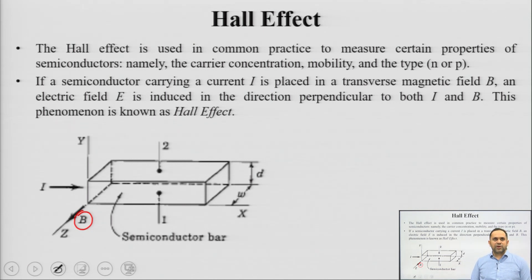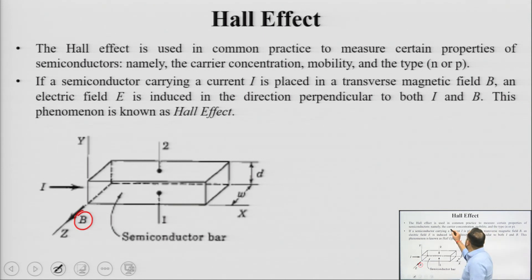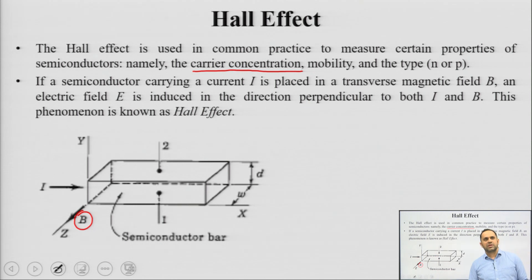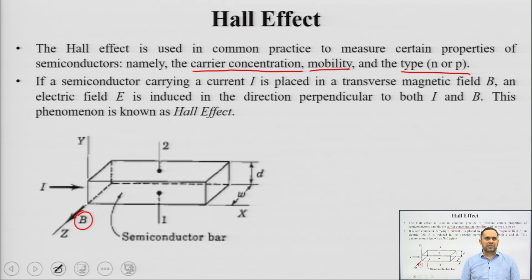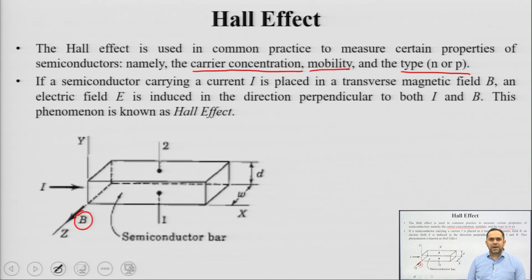From the purpose point of view, Hall effect is used very commonly to measure very critical parameters of any semiconductor. These critical parameters are carrier concentration — how many charge carriers, whether electrons or holes, are present per unit volume — carrier mobility, and the type or polarity of the semiconductor, basically whether your semiconductor is n-type or p-type. These are the parameters actually obtained from analyzing a material in this kind of Hall arrangement.